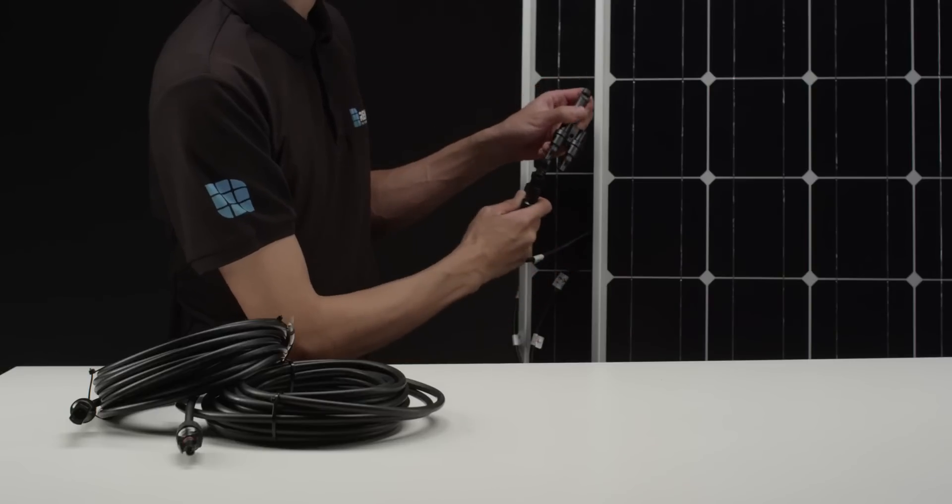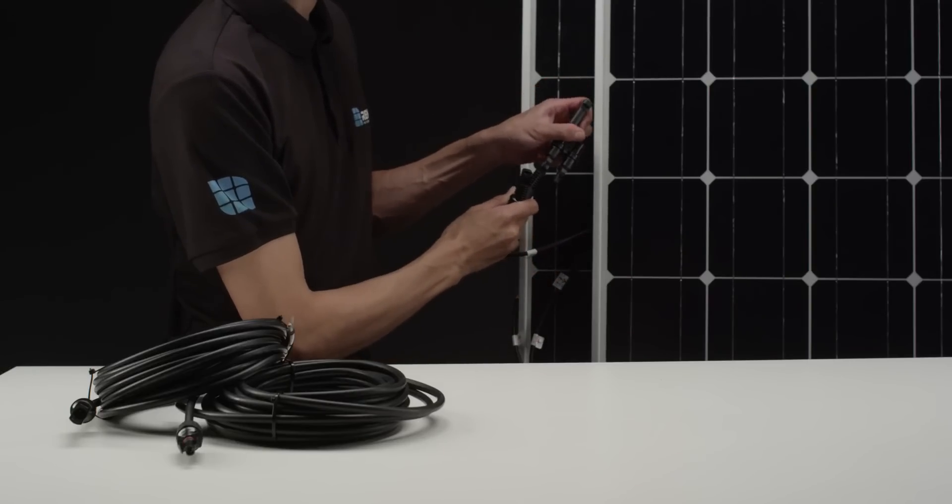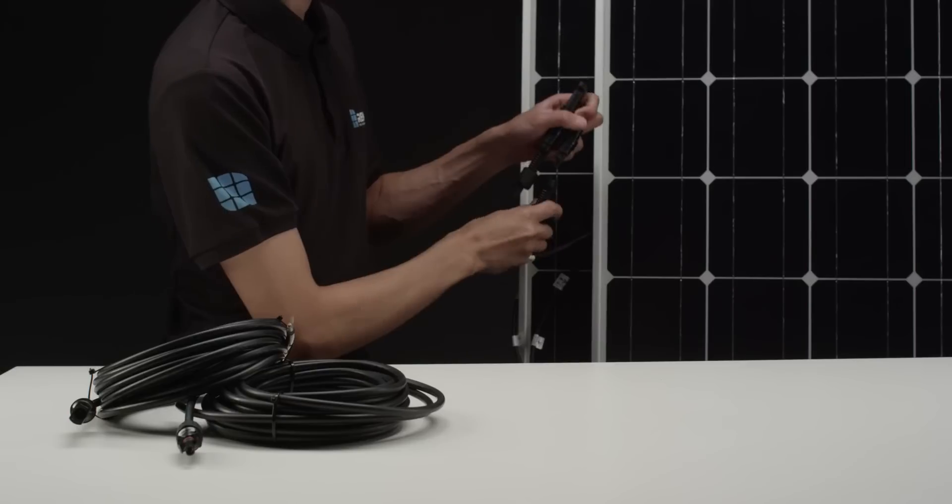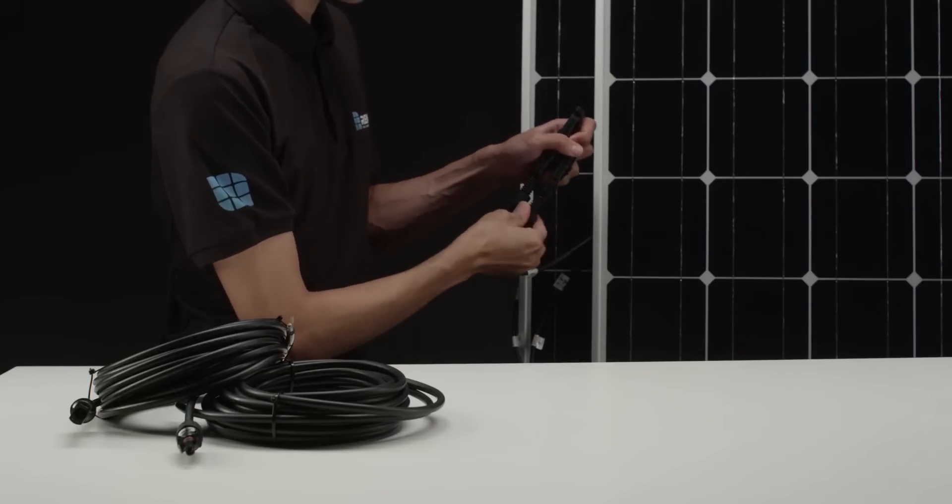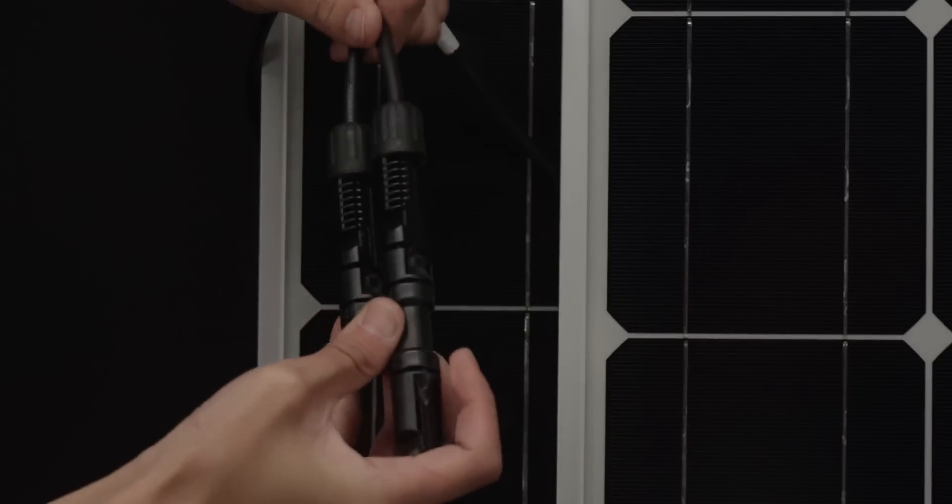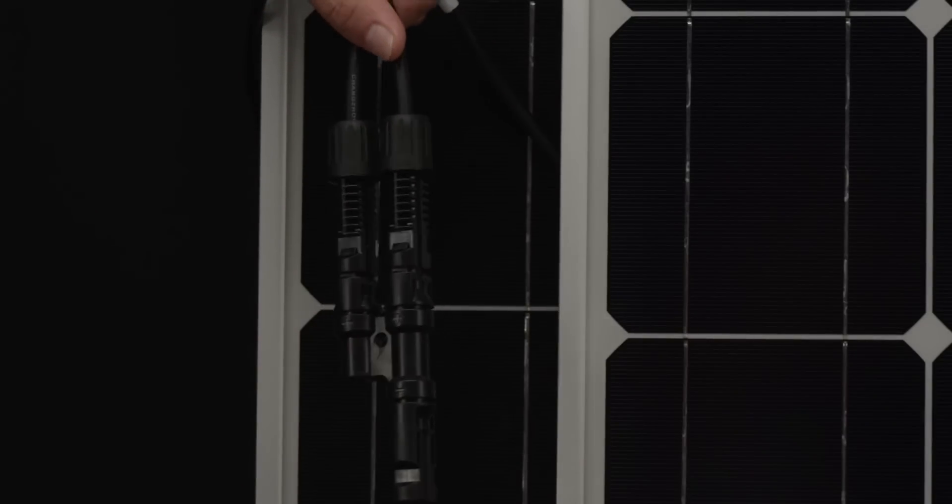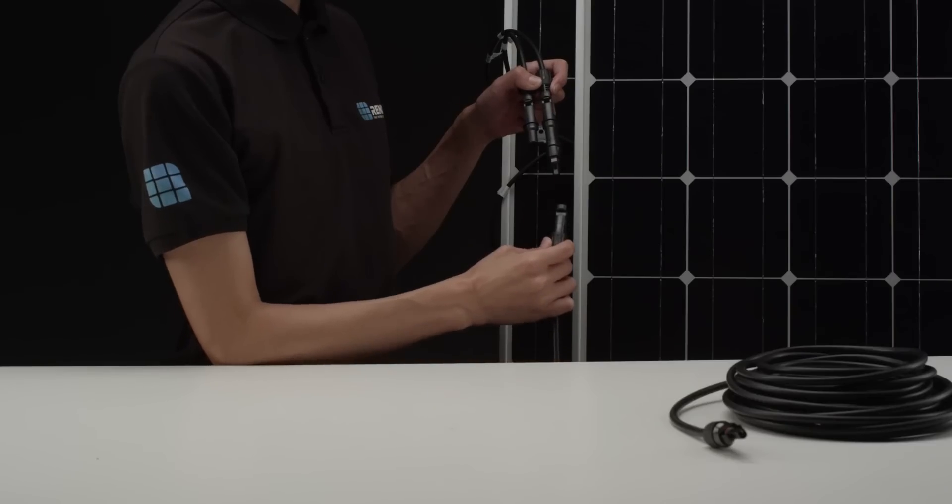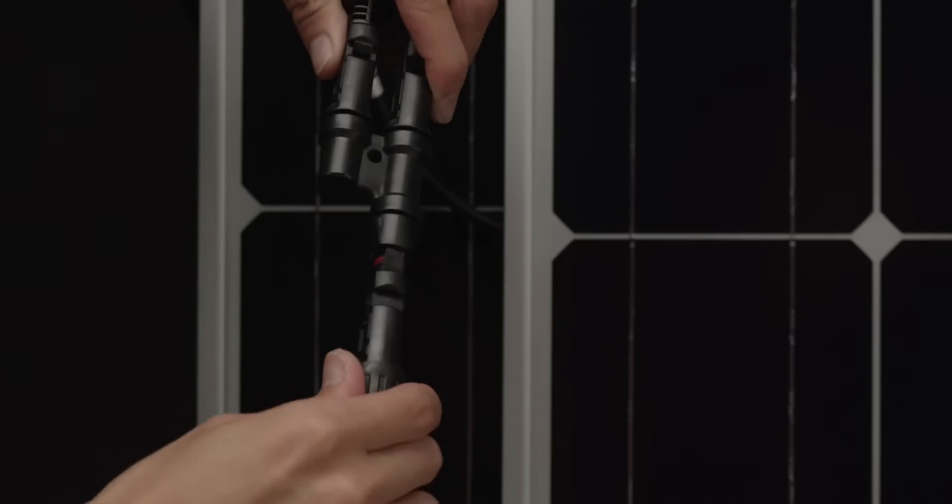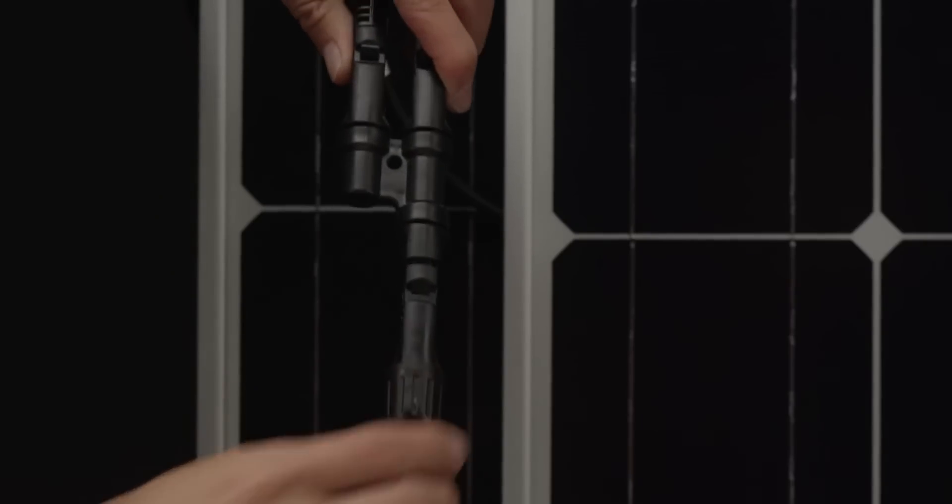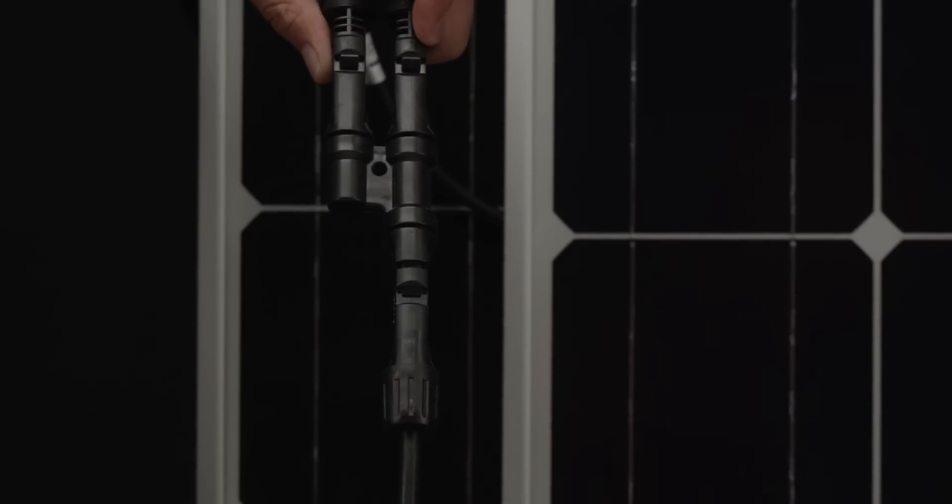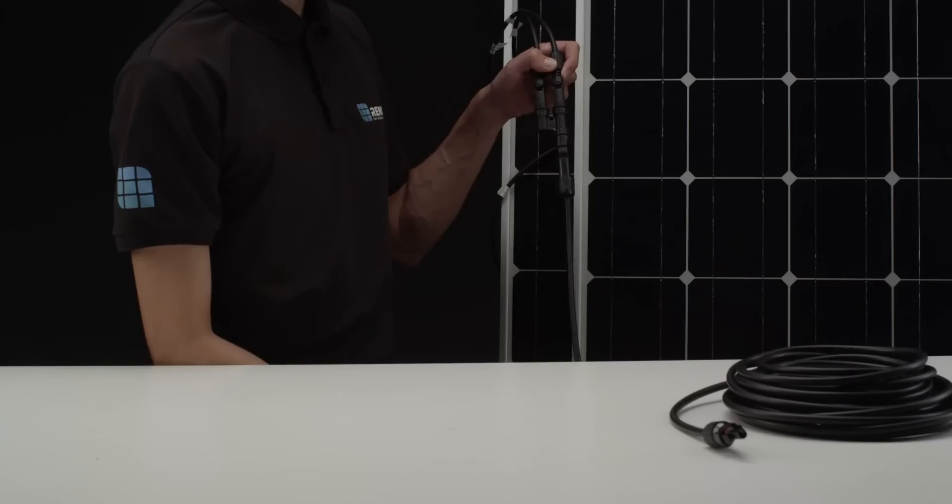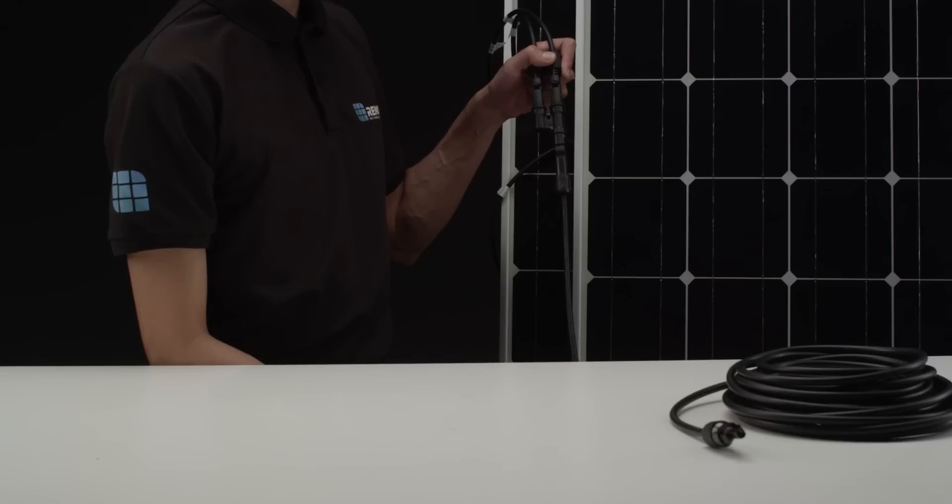In this next step we will connect both panels in parallel by using the MC4 branch connectors. Connect all positive male connectors to a branch connector and connect all negative female connectors to the other branch connector. Next, connect the included adapter kit to the branch connectors. Don't get confused as the branch connectors are the same polarity despite switching MC4 connector on the adapter kit.